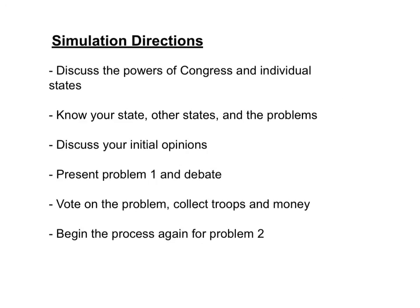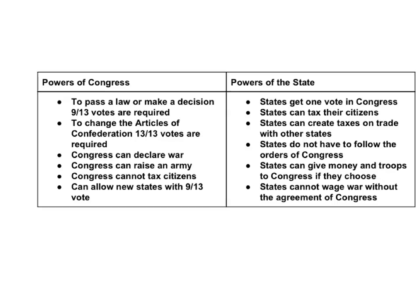Once students are in the room, I begin the lesson by describing that we are going to be participating in a simulation of the Articles of Confederation, and that they'll be able to see how effective or ineffective this system of government was. We begin by discussing the powers that Congress has and the powers that individual states have. Each packet has these powers listed, but I also write them on the board. I explain to students that the group making up Congress will have to reach 9 out of 13 votes to make a decision.